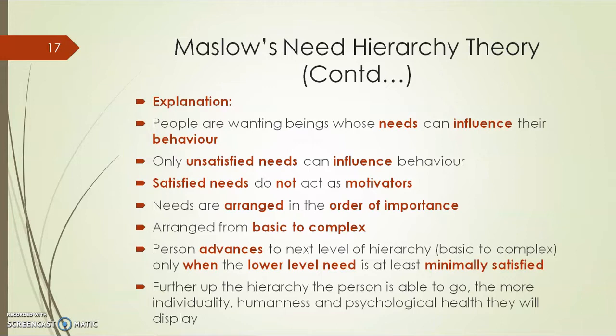We direct all our energies towards achievement of a goal, but once that goal is accomplished, you look for the next goal. Once one thing has been achieved, it stops acting as a motivator and you look for the next thing you want to achieve in your life. Maslow arranged needs in an order of importance from basic to complex — from small basic needs to larger complex needs. A person advances from one level of the hierarchy to the next, only when the lower level need is at least minimally satisfied.